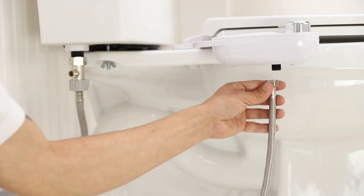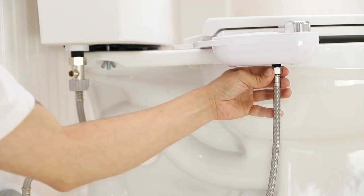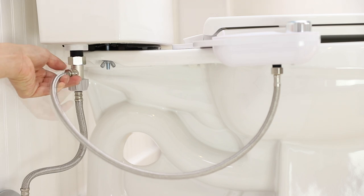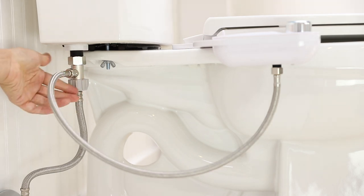Attach the braided metal bidet hose to the water inlet under the bidet attachment. Connect the open end of the bidet hose to the open side of the T-valve.